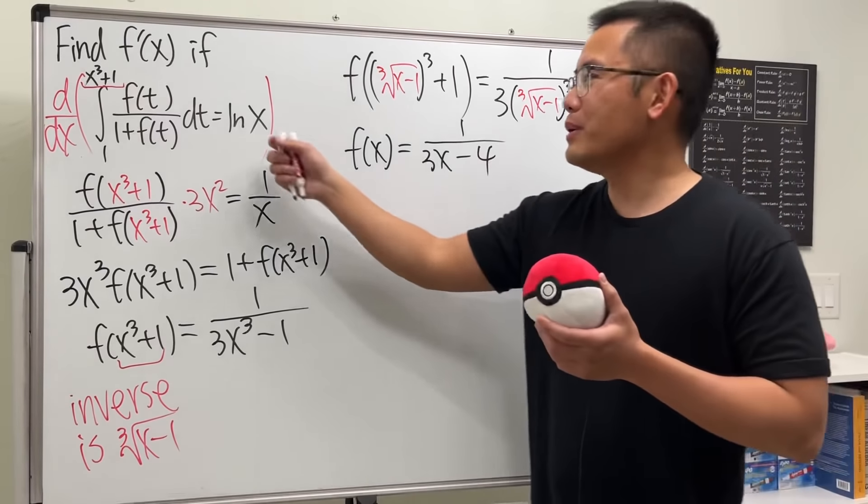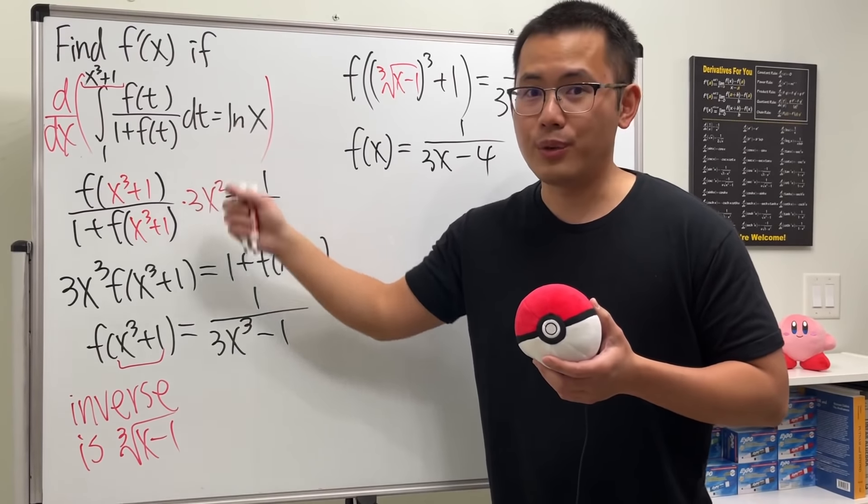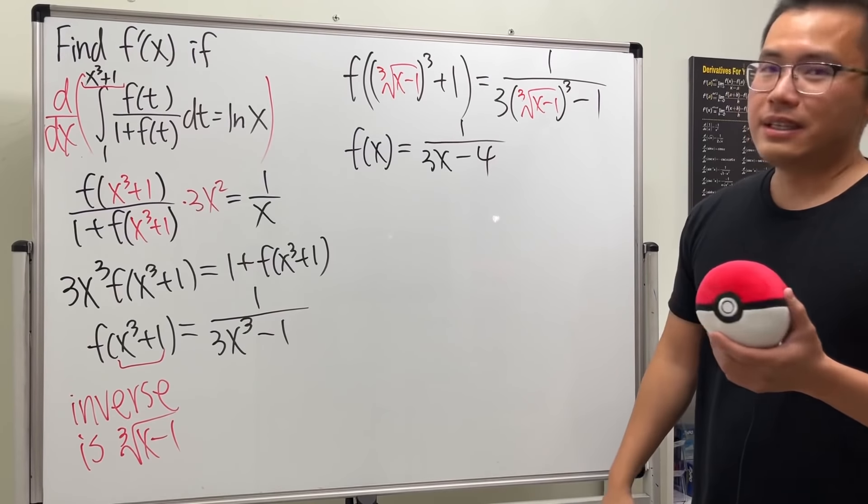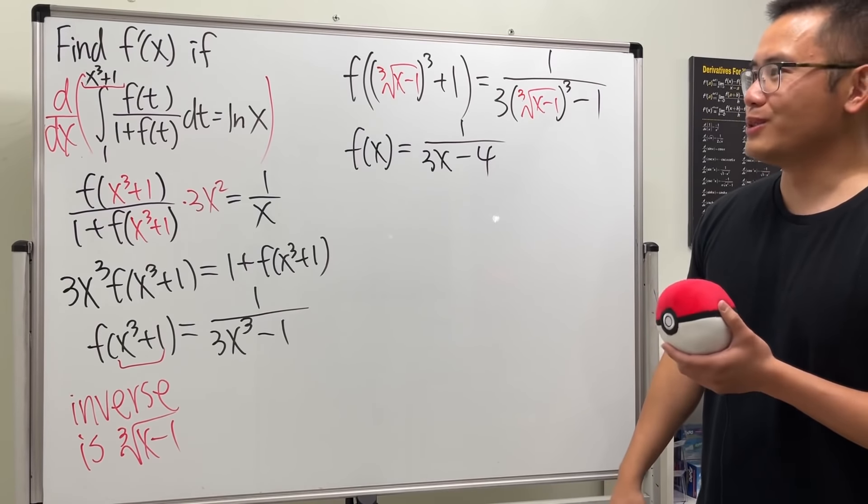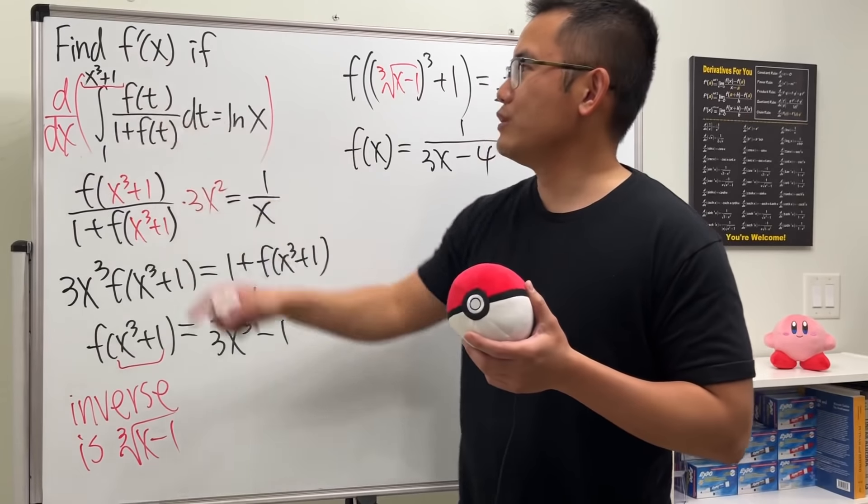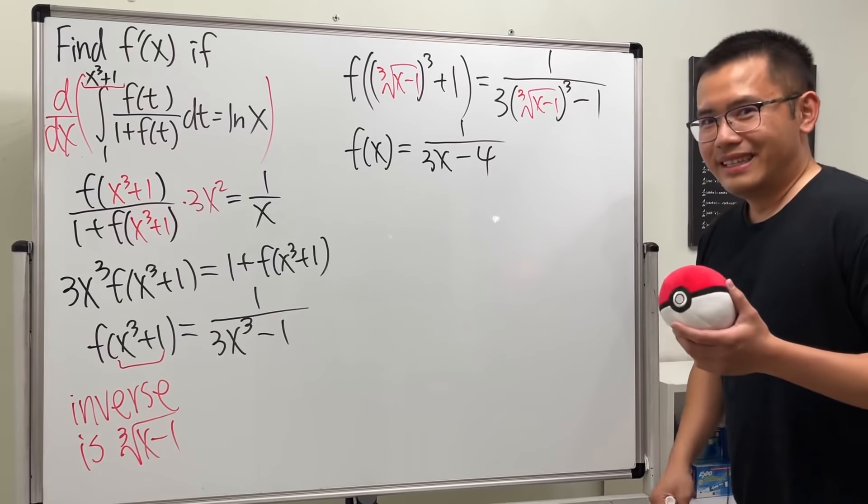And then plug in 1 and subtract. Guess what? You are going to end up with ln(x). That's pretty crazy. So if you guys would like to go ahead and just try it out. Yeah. And yes, I really make this out. I think this is really cool. But we're not done yet because we still haven't found the derivative of f.